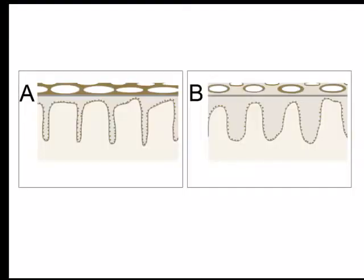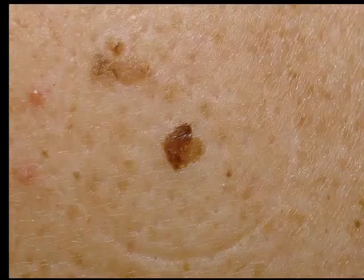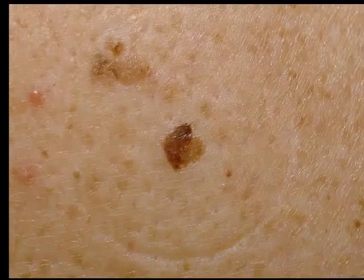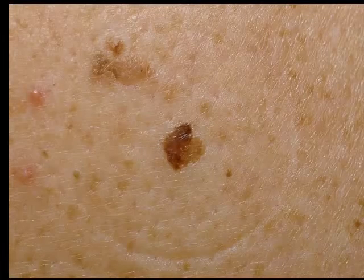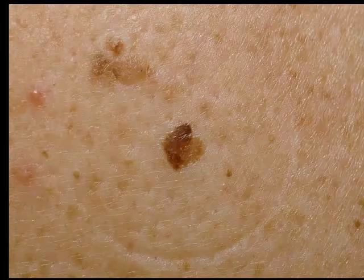Here again, the sketches: A, reticular pattern; B, circles. Given this pathologic dermatoscopic correlation, we know that whenever we see circles on non-facial skin, there is hyperpigmentation of keratinocytes and acanthosis of the epidermis. Which diagnosis does this indicate?